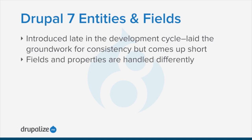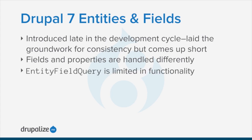Fields versus properties: in Drupal 7, properties represent data that is required for any entity of a given type, like the ID and title of a node. Fields, on the other hand, are user configurable and can be added to an entity type on a per-use case basis. The problem is that the system handles each differently, so the options available for configuring the body field are different than those available for the title property, and this causes a lot of confusion. The recommended way to get a list of entities is to use the EntityFieldQuery class rather than querying the database directly. The problem is EntityFieldQuery is missing a lot of advanced functionality, like the ability to perform joins, and it also suffers from trying to distinguish between properties and fields.